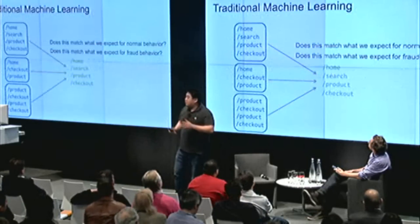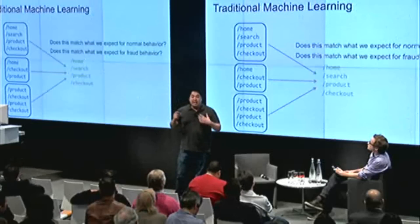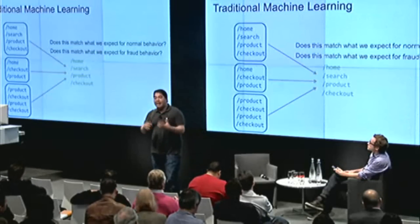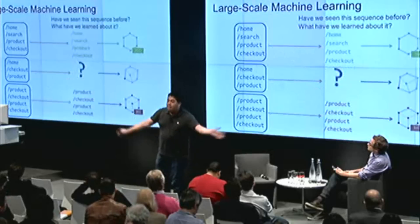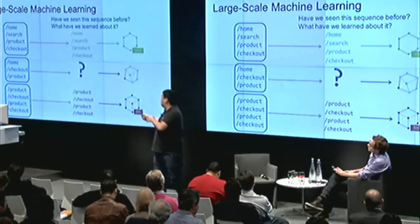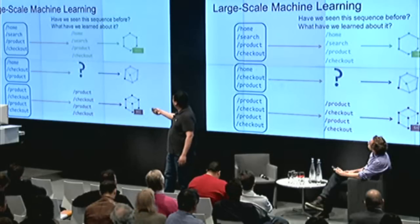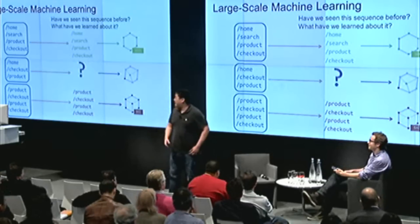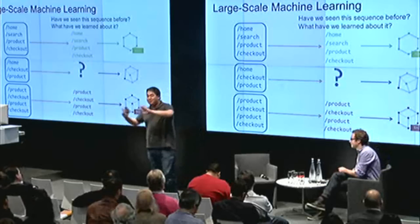Traditional machine learning versus large-scale machine learning: traditional ML is basically hand-crafting a statistical model based on human assumptions, while large-scale machine learning looks at all possible sequences of data. Google and Amazon do this. We were about five slides away from the end, but that was the gist of it.